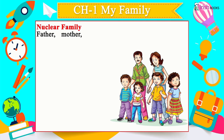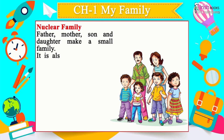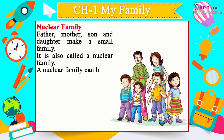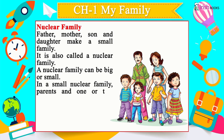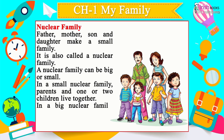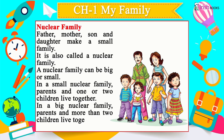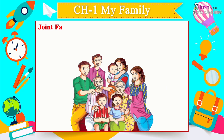Nuclear Family: Father, mother, son and daughter make a small family, also called a nuclear family. A nuclear family can be big or small. In a small nuclear family, parents and one or two children live together. In a big nuclear family, parents and more than two children live together.